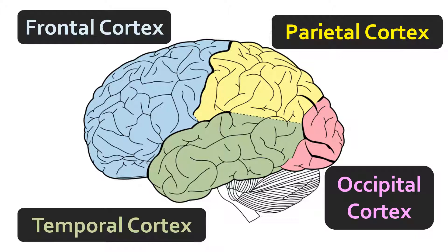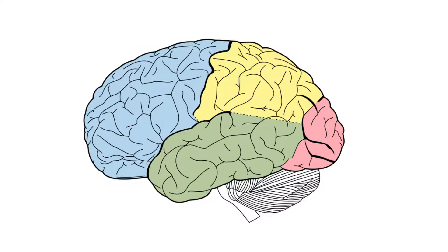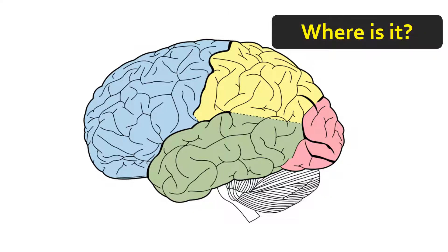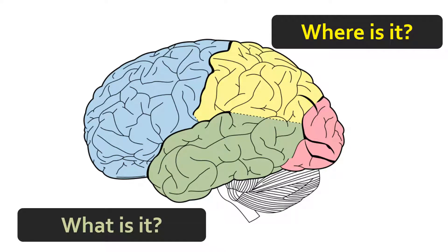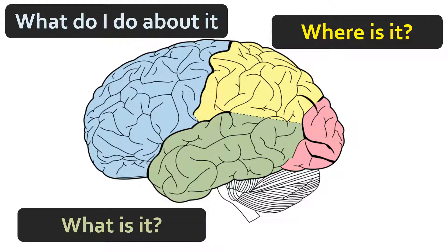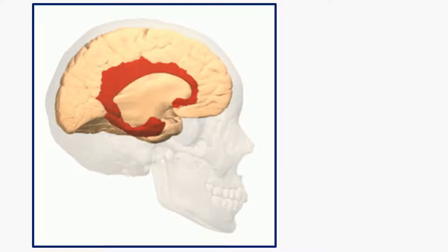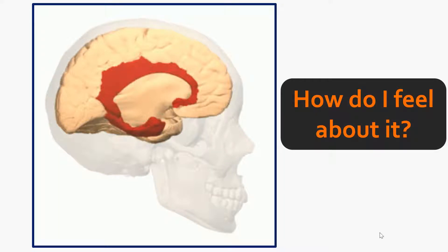Very simplistically, the parietal cortex tells us where new sensory information is coming from, the temporal cortex tells us what it is, and the frontal cortex figures out what to do about it. There's a fourth component — the limbic system, shown in red — which tells us how we feel about new incoming sensory information. It's responsible in large part for generating emotions and integrating them with our behavioral responses.